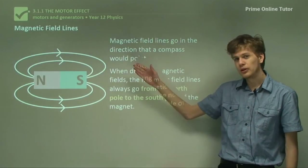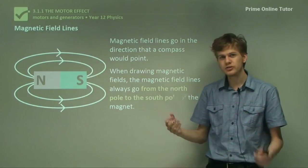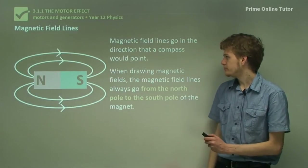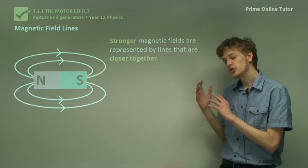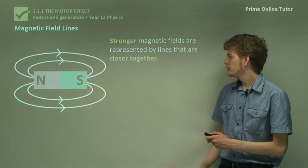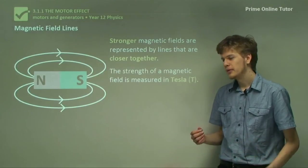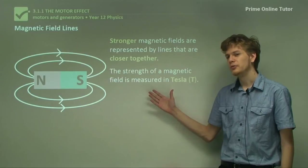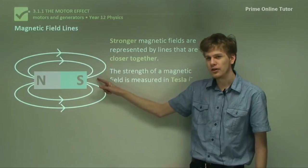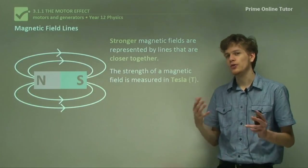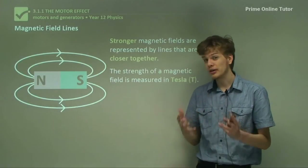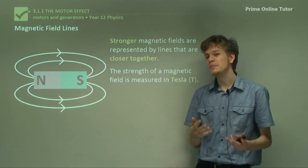We can see that the field lines are always closed — they never go off into the distance or just appear on their own. They always go from the north pole to the south pole. If we have a stronger magnetic field, the field lines will be closer together. If we have a weaker magnetic field, they'll be further apart. We can measure the strength of the magnetic field in Tesla. Very close to the magnet the field lines are quite close together, but as we move further away the field lines get further apart, meaning the field is stronger close to the magnet and weaker further away.